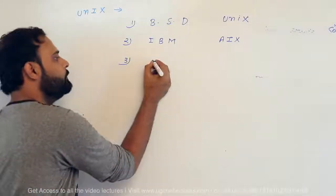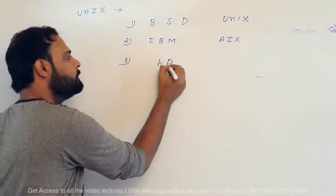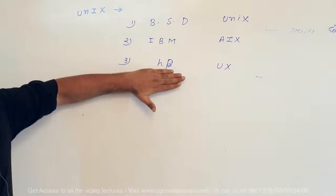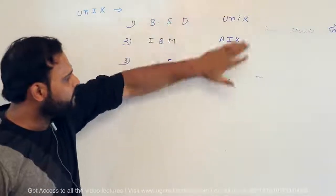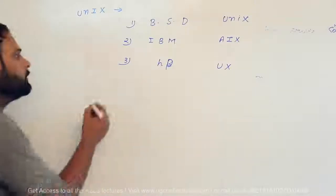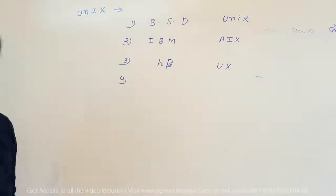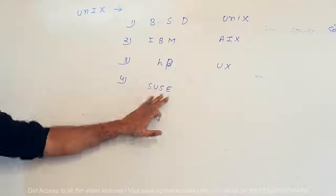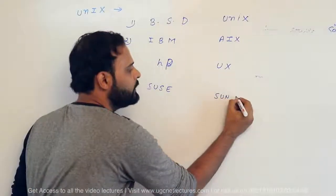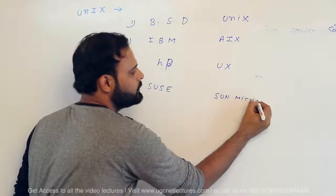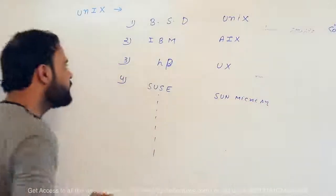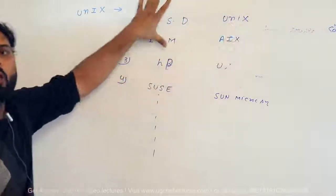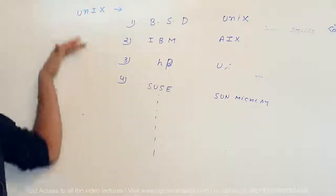Another UNIX flavor is from HP — Hewlett-Packard — and their UNIX operating system is called HP-UX. There is also SUSE, developed by Sun Microsystems. There are many other UNIX operating systems developed by various companies. These are some of the main descriptions about UNIX operating system flavors.